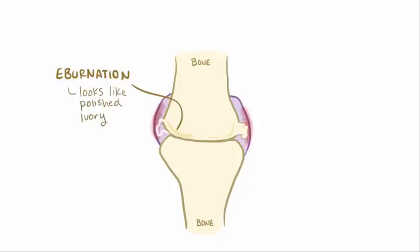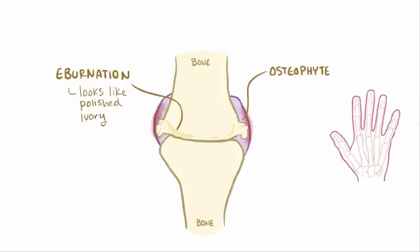Finally, on the edges, bone grows outward, called osteophytes, which makes the joints look wider, something that's most obvious when it's seen in the distal and proximal interphalangeal joints or the finger joints, called Heberden nodes in the distal joints and Bouchard nodes in the proximal joints.